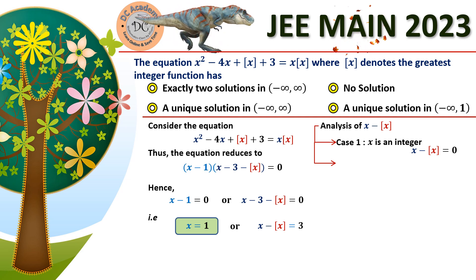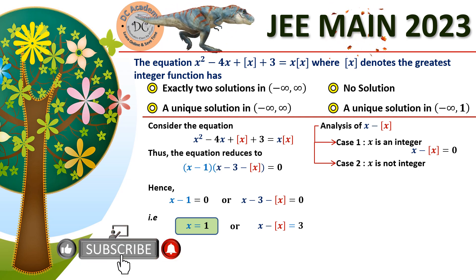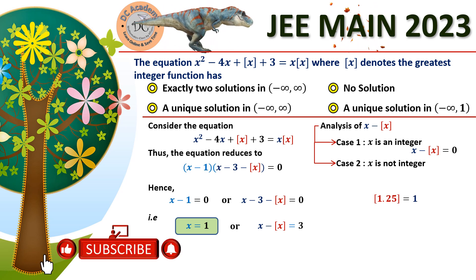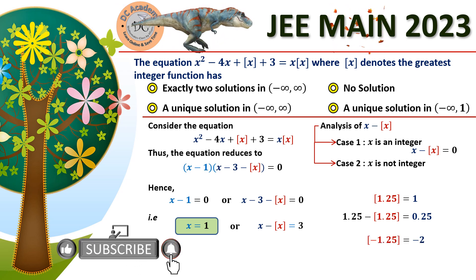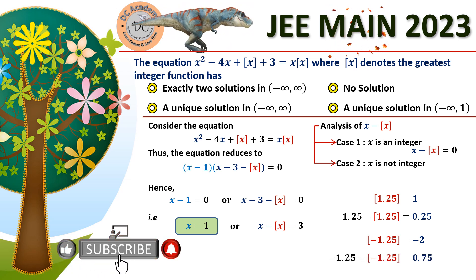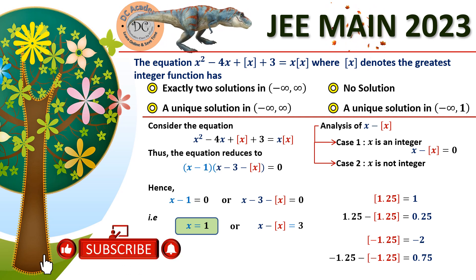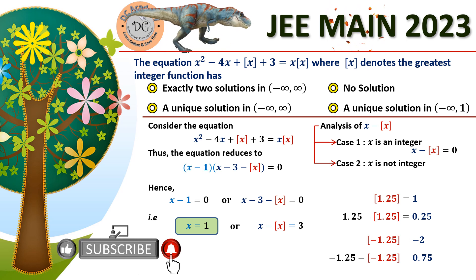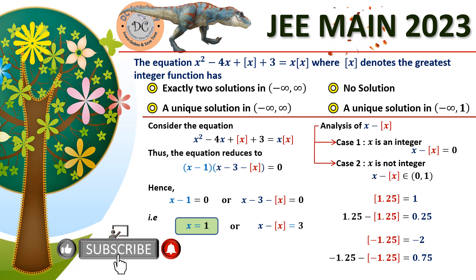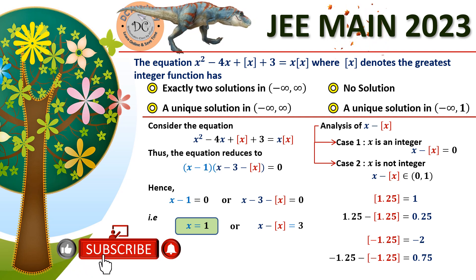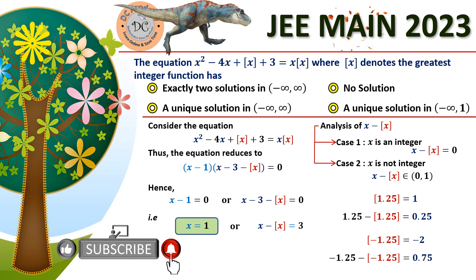Case 2: x is not an integer. For example, box(1.25) equals 1, so 1.25 minus box(1.25) gives 0.25. For a negative value, box(minus 1.25) equals minus 2, and minus 1.25 minus (minus 2) gives 0.75. So x minus box(x) always belongs to the open interval (0, 1) — it is always just a fractional decimal, never reaching or exceeding 1.